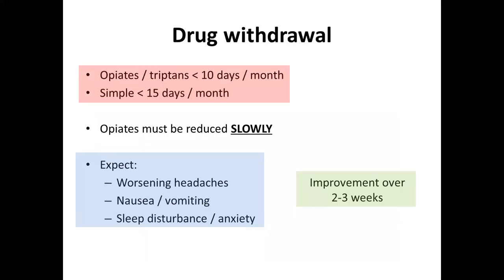Regarding drug withdrawal: it's perfectly safe to stop simple analgesics and triptans abruptly — paracetamol, ibuprofen, and the different triptans can just be stopped without significant physiological or psychological side effects. In the case of opiate-based medication such as morphine, codeine, and tramadol, stopping abruptly can cause withdrawal symptoms including cardiovascular and psychiatric symptoms. That must be avoided — opiates must be slowly reduced over days and weeks rather than stopped abruptly.